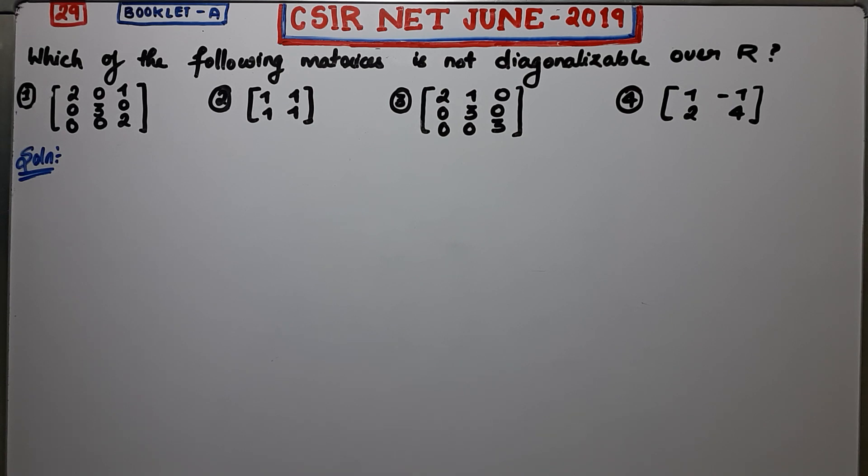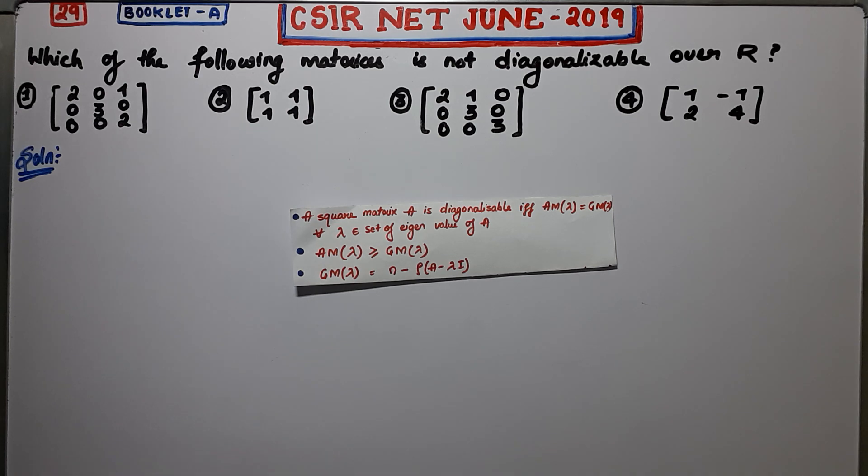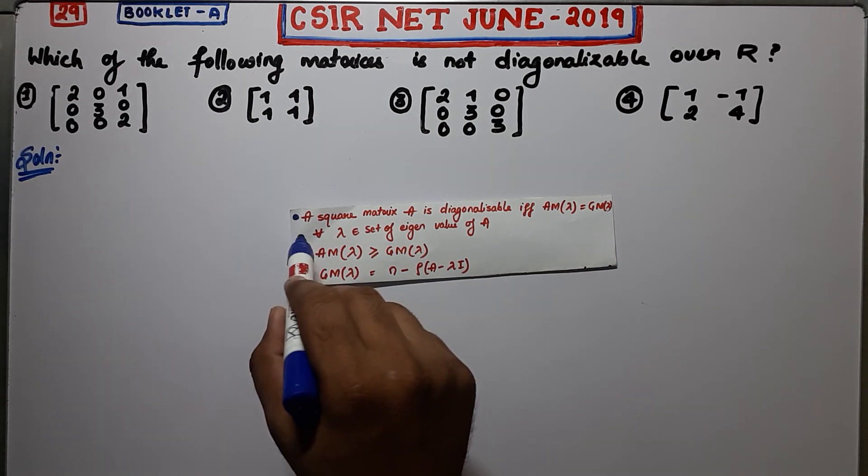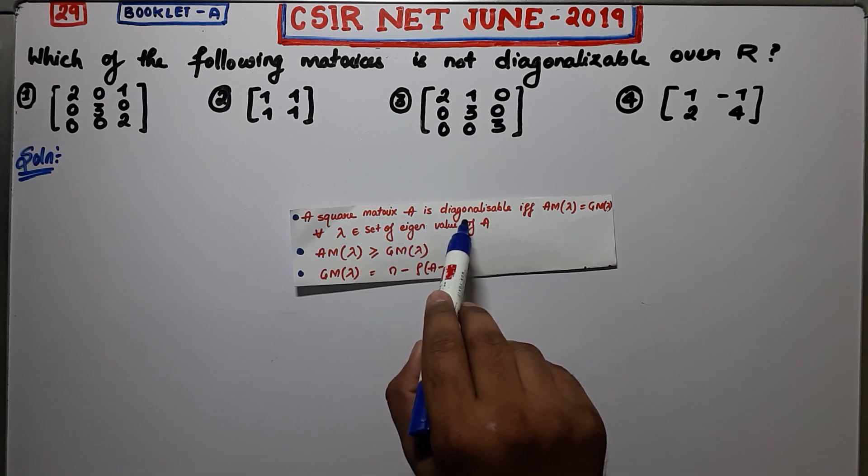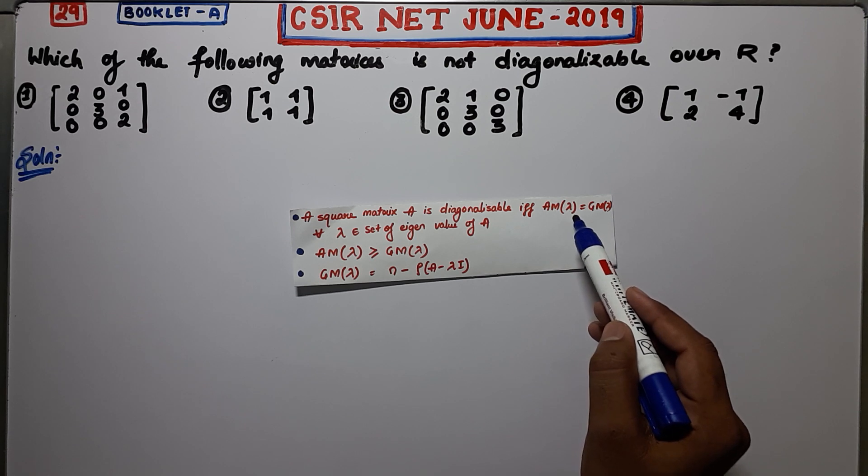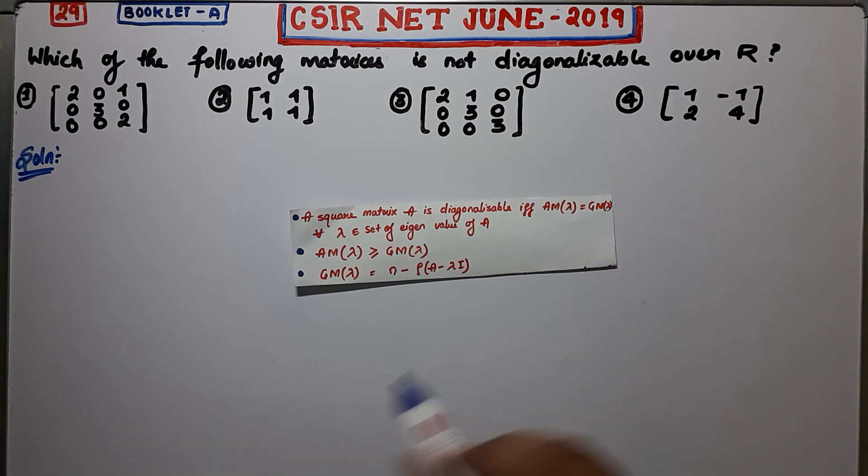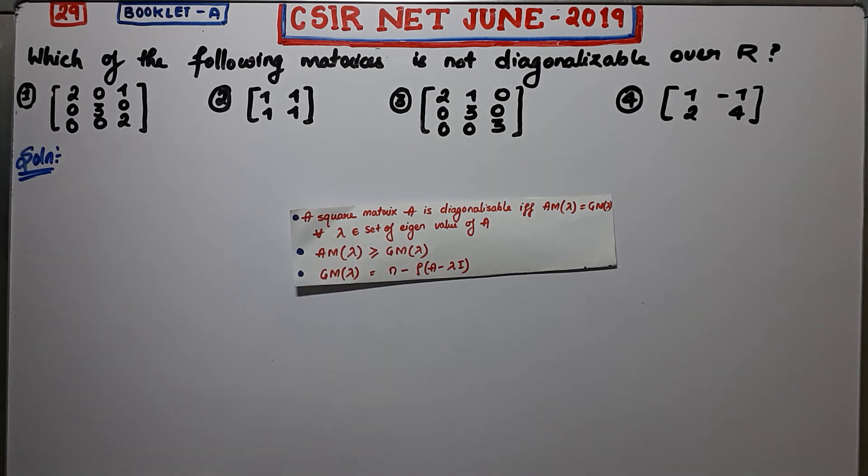The first note suggests that a square matrix A is diagonalizable if and only if algebraic multiplicity of your eigenvalue is equal to geometric multiplicity of eigenvalue, and this should happen for every eigenvalue of that matrix A.